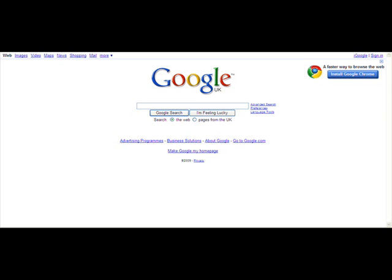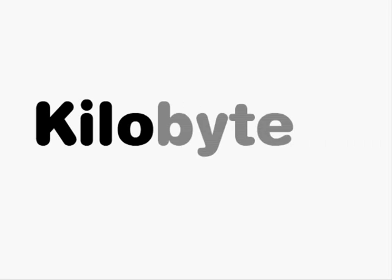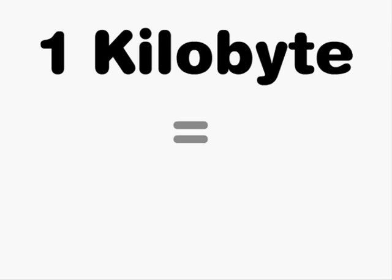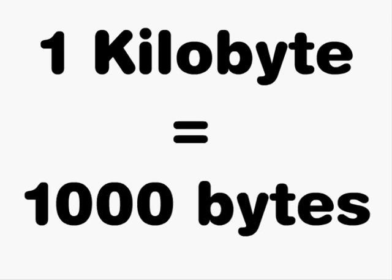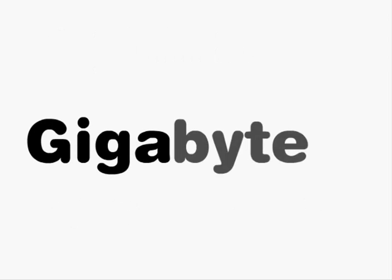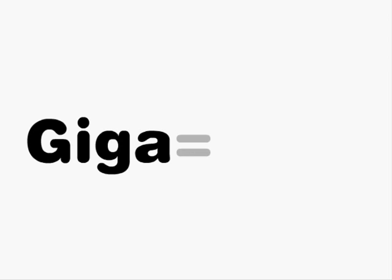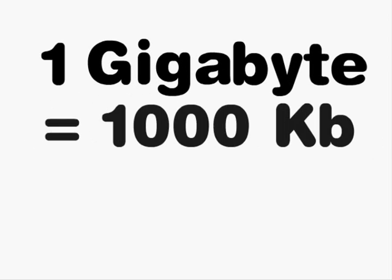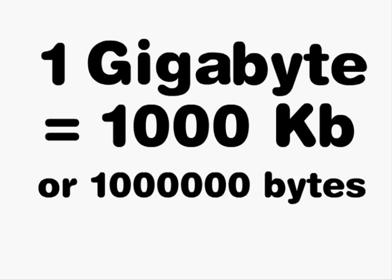Let's start with kilo and giga. First, kilo — as in kilobyte, kilometre, kilogram — it means a thousand, so one kilobyte is roughly one thousand bytes. Next, giga — as in gigabytes — it means millions, so one gigabyte is one thousand kilobytes, or one million bytes.